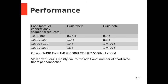We have run a performance analysis comparing Guile Fibers and Guile-Petri. We observe a four times slowdown, which is mostly due to the additional number of short-lived fibers per connection.